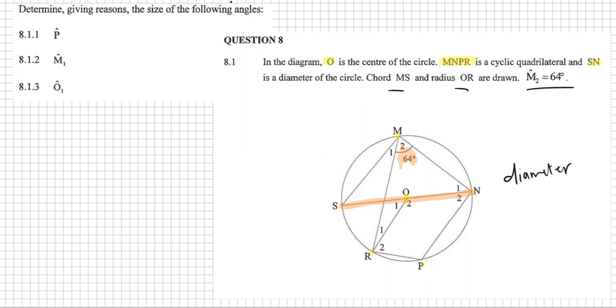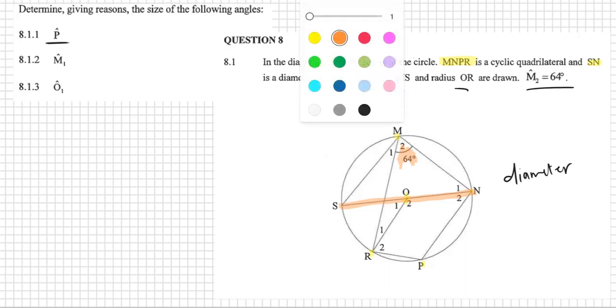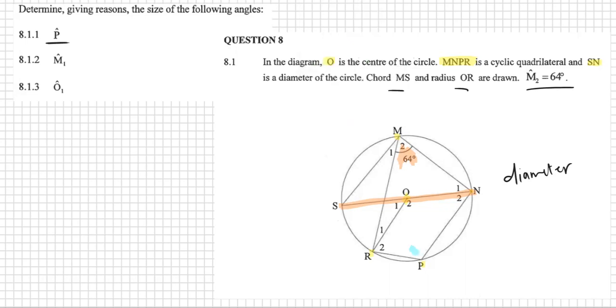Question 8.1.1 wants to know angle P. What is angle P? Determine, giving reasons, the size of the following angles. Angle P is over here. This one is fairly straightforward. It was given that MNPR is a cyclic quad, and we know that opposite angles of a cyclic quad add up to 180. So 64 plus angle P must add up to 180.